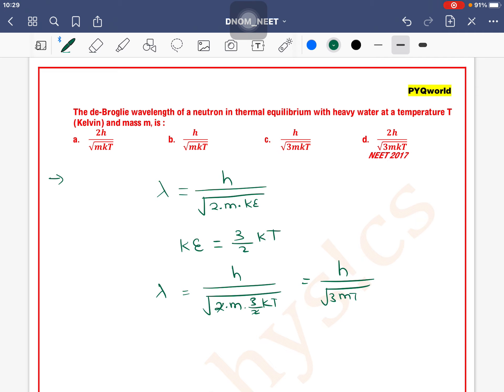h divided by the square root of 3mkT—that means option C is the correct one, right?